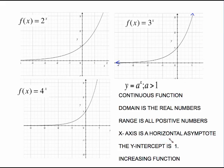The x-axis is a horizontal asymptote. The y-intercept is 1 and it is an increasing function. What increasing refers to is from left to right, what's it doing? It's getting higher. All of these, as we move left to right, it is getting higher.